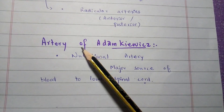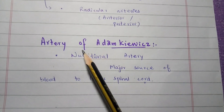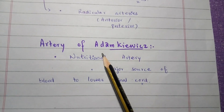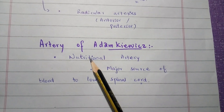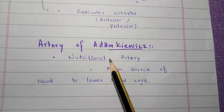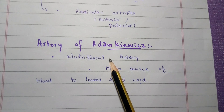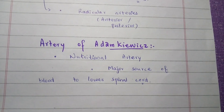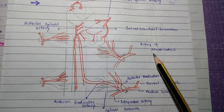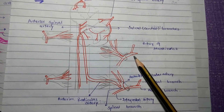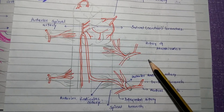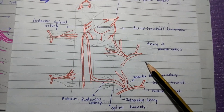Another important artery of the spinal cord is the artery of Adamkiewicz. It is a nutritional or feeder artery of the spinal cord, usually present in the lower thoracic and upper lumbar parts. It is mostly unilateral, and may become one of the major sources of blood to the lower parts of the spinal cord.